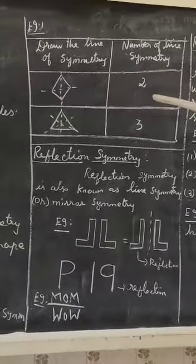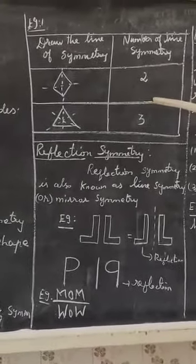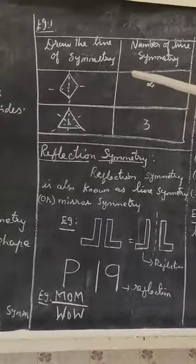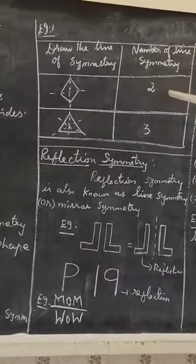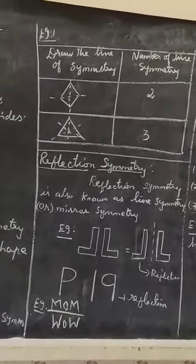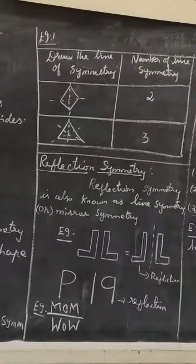This is an example problem. You have to find the number of lines in a given shape. Draw the lines of symmetry and count the number of lines. You can count and write the numbers.